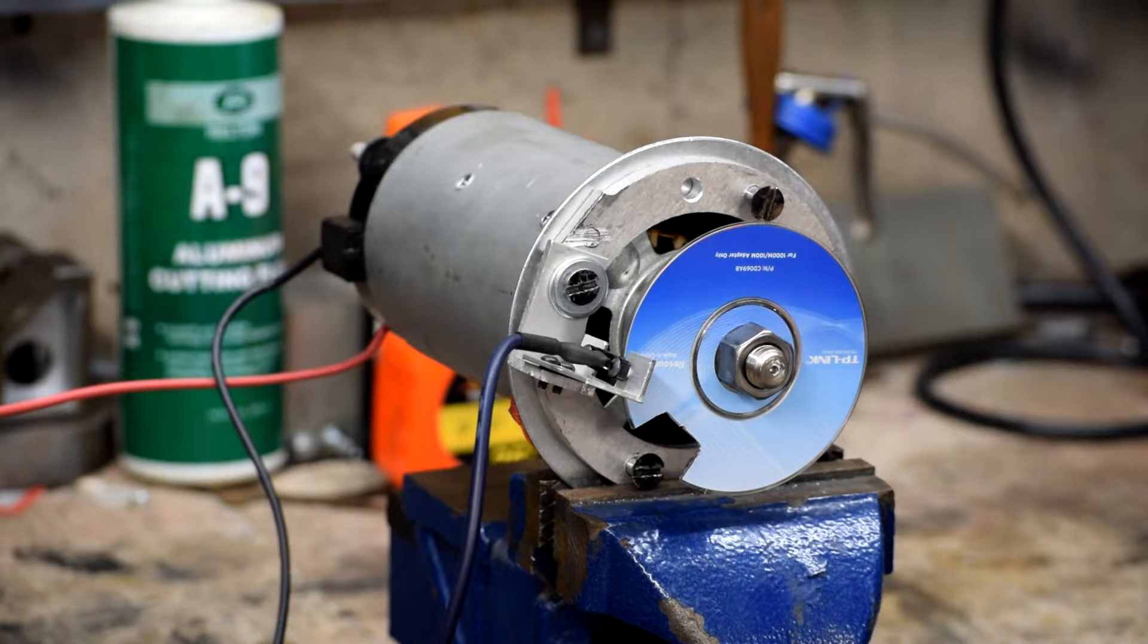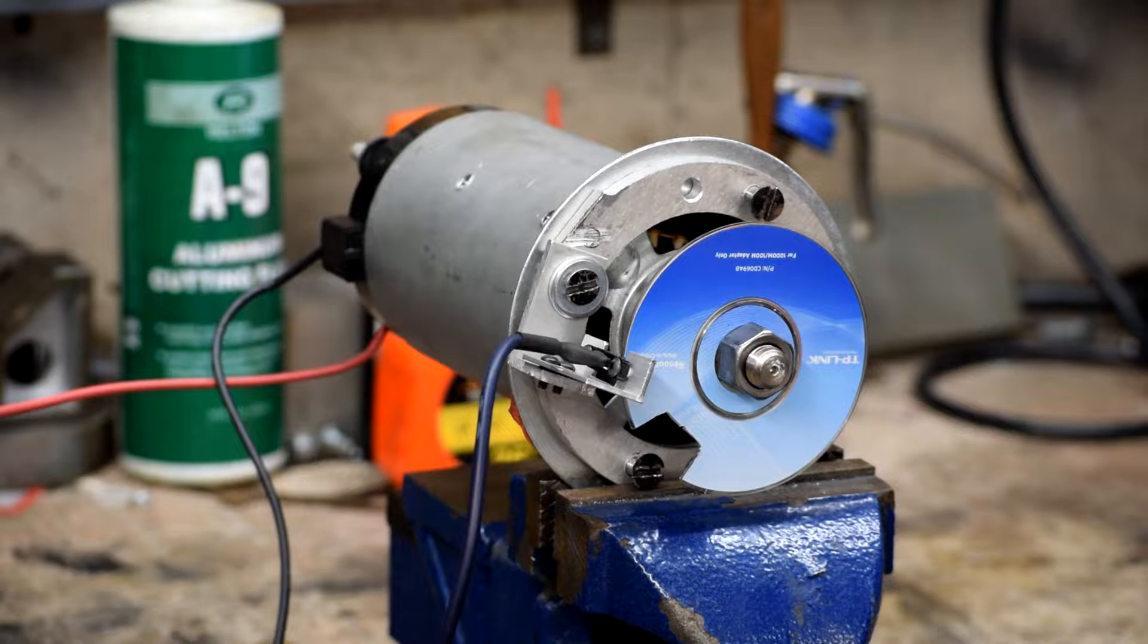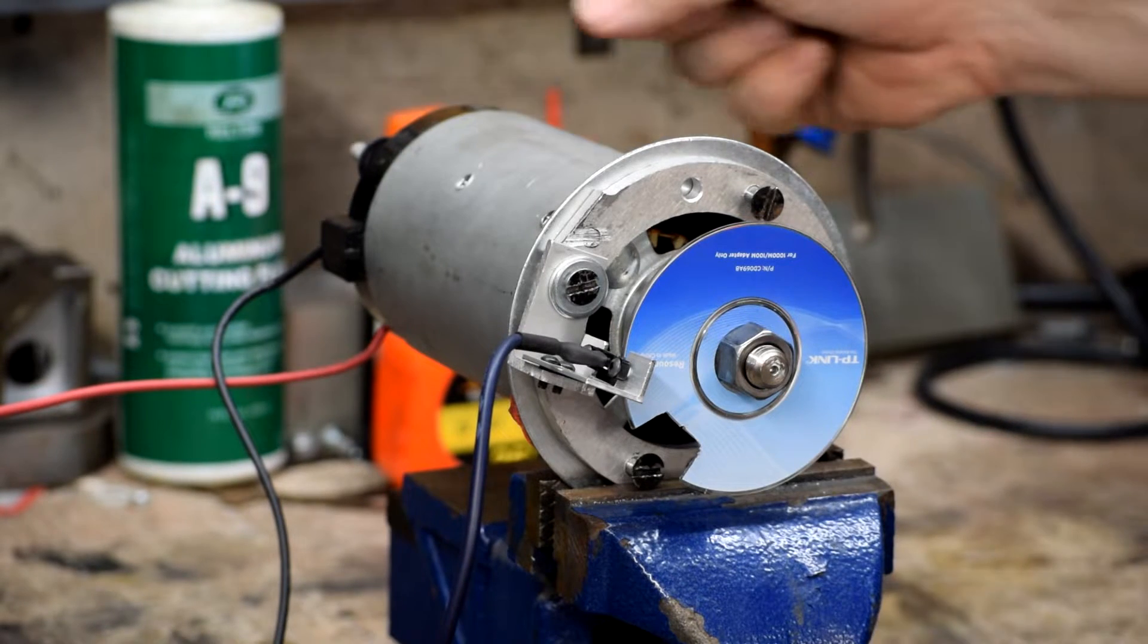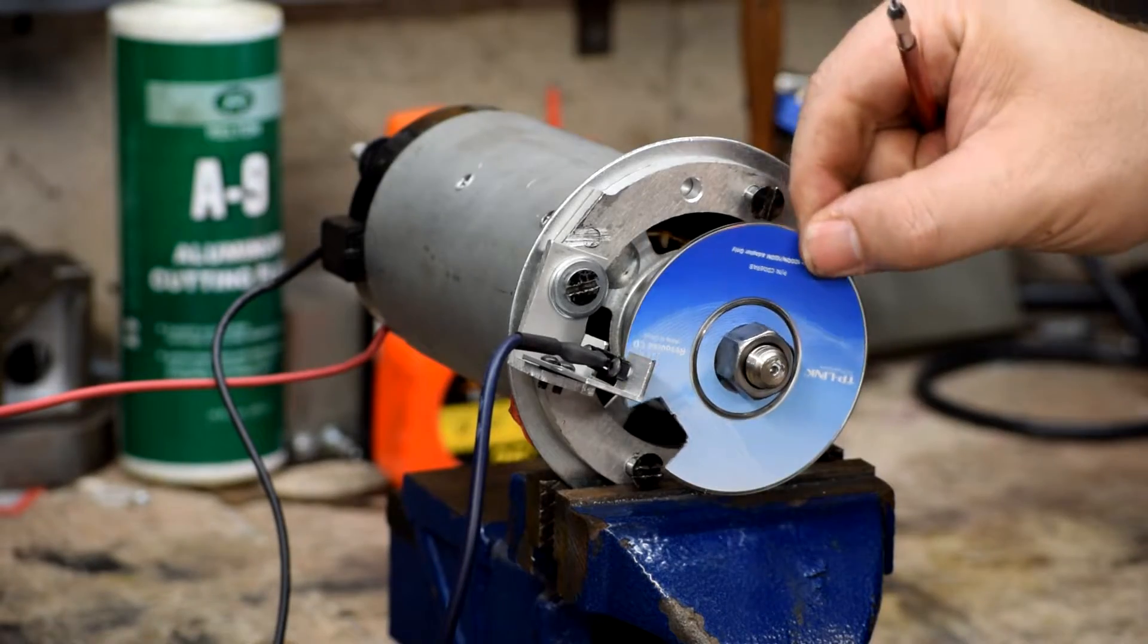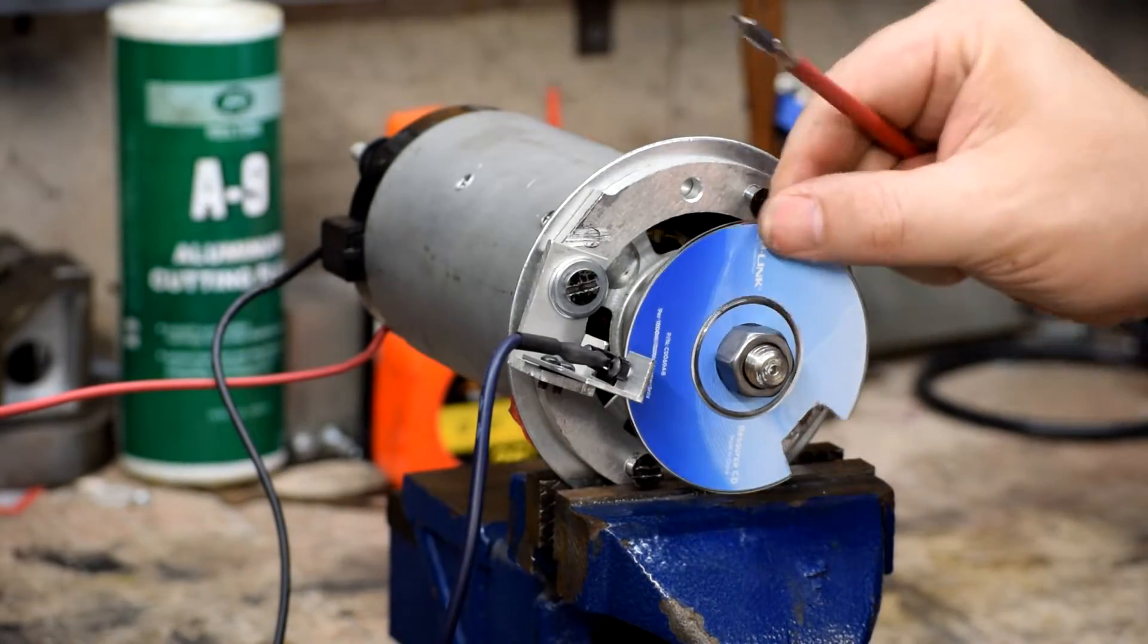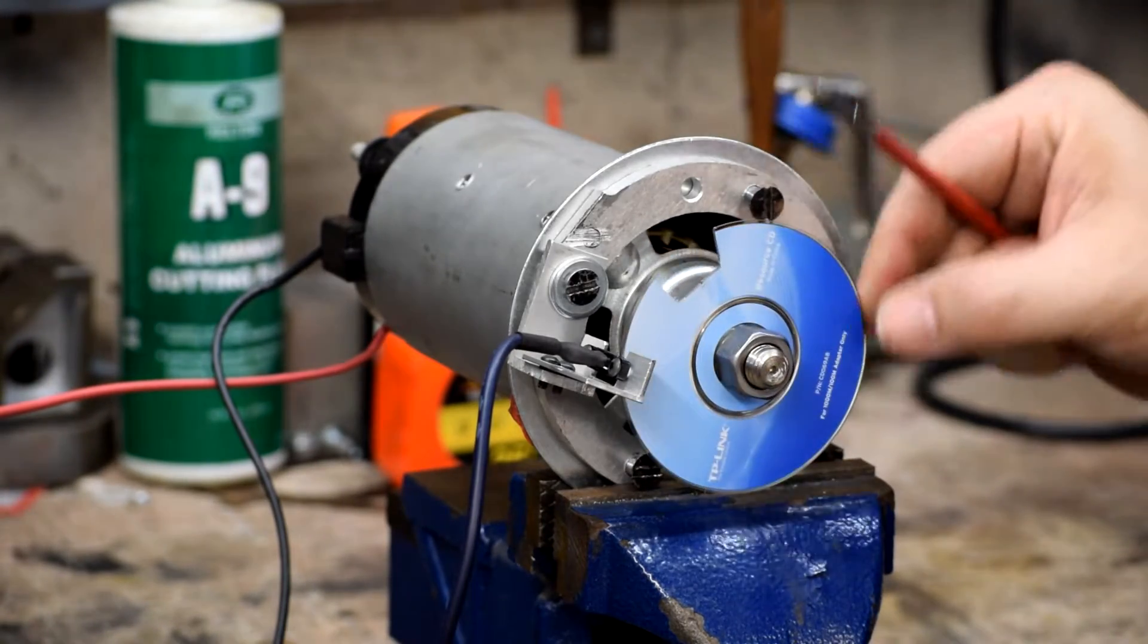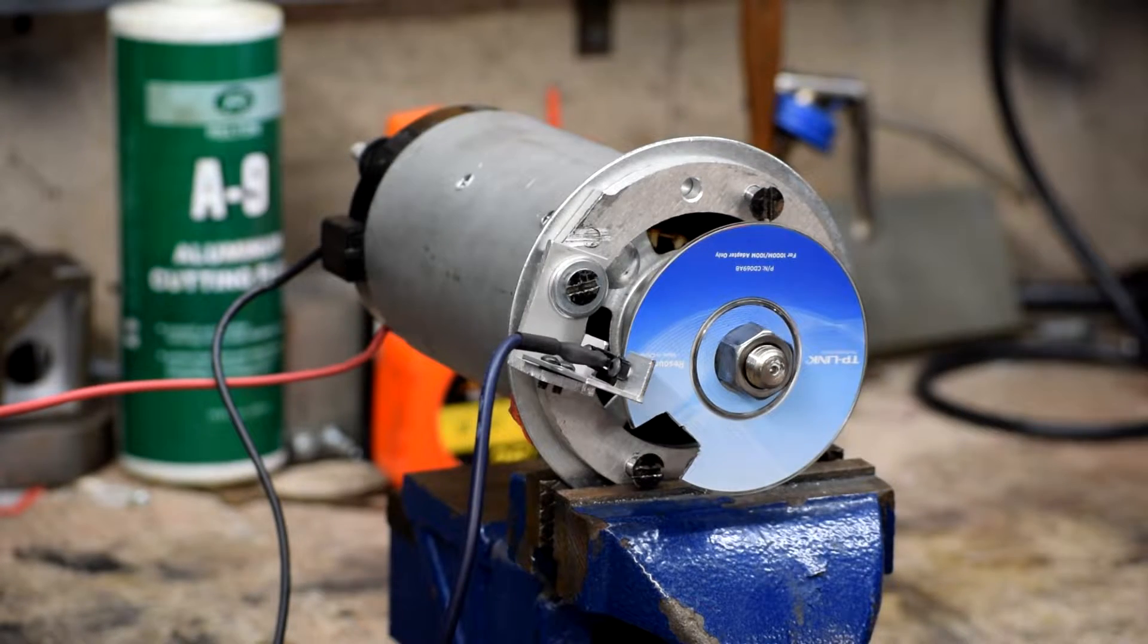This here is a photo sensor that this interrupter disk uses to send a tachometer signal to the computer. And all I've done is taken an old CD, one of the mini CDs that was a driver disc for an ethernet adapter, and just bolted it on here. I've carved myself a notch right there. So as that rotates around, it progressively interrupts or de-interrupts the signal coming out of that sensor.